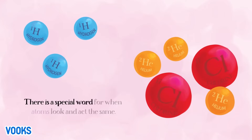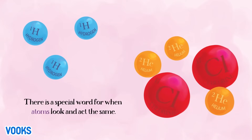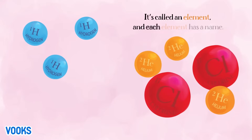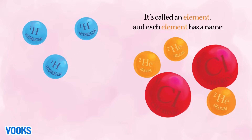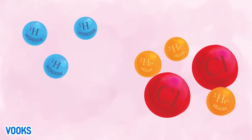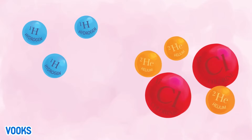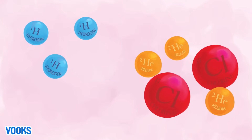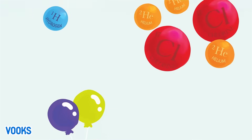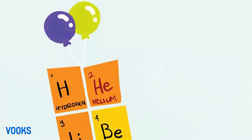There is a special word for when atoms look and act the same. It's called an element, and each element has a name. Hydrogen, one. Helium, two. Chlorine, 17. Helium, two.